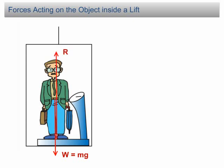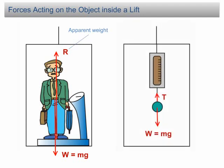The apparent weight or the readings of the scale is equal to the normal reaction. If an object is hung on a spring balance, the forces acting on the object are the weight and the tension. The apparent weight or the readings of the spring balance is equal to the tension. In SBM, almost all the lift questions are related to apparent weight.